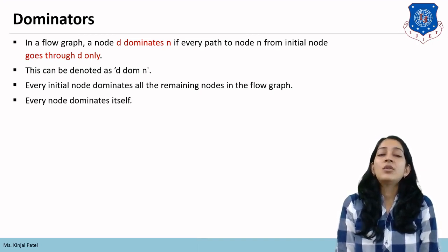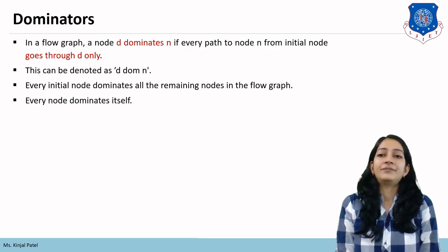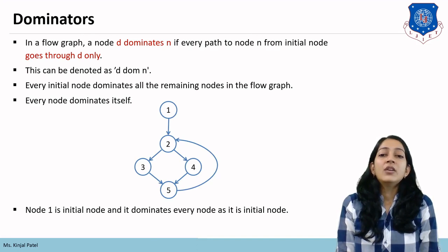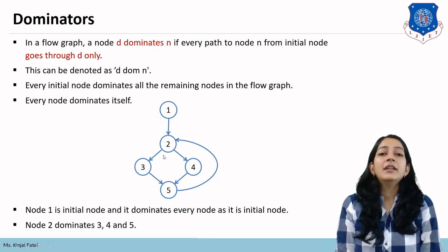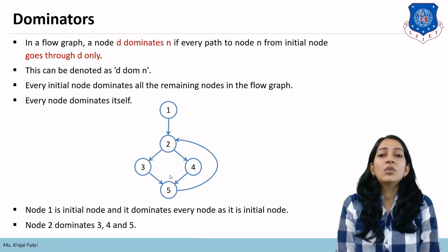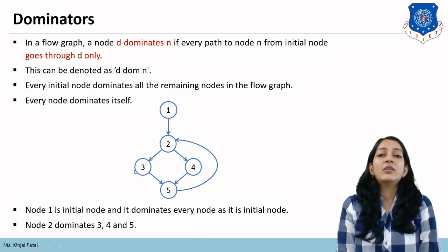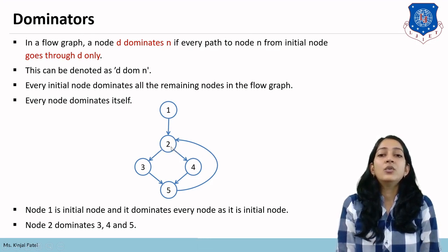Here is a flow graph where node 1 is the initial node. Since node 1 is the initial node, it dominates all nodes: 1, 2, 3, 4, and 5. To find the dominators of node 2, we look at its subtree containing nodes 3, 4, and 5. From node 1, the only path to node 3 goes through node 2, so 2 dominates 3. Similarly, the only path to node 4 goes through node 2, so 2 dominates 4.